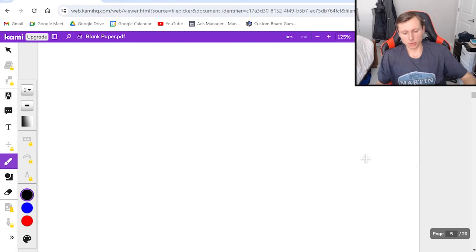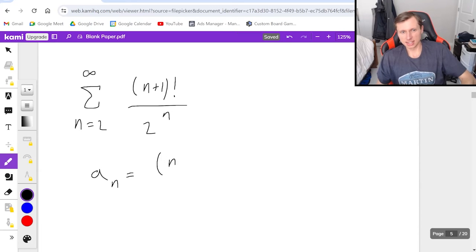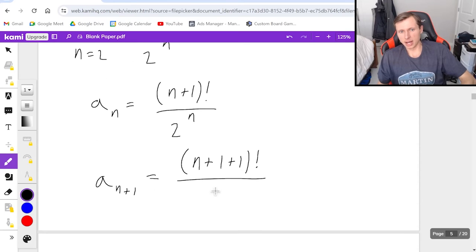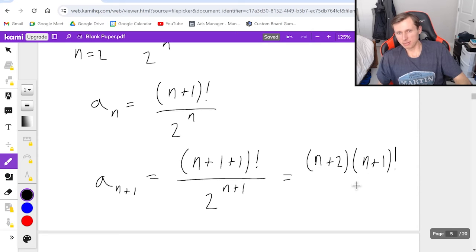So now here's the last one we're going to look at for today. It's the series from n equals 2 to infinity of n plus 1 factorial divided by 2 to the n. So for this one, a sub n is n plus 1 factorial divided by 2 to the n. It's definitely going to work because I have factorial and n in the exponent this time. So a sub n plus 1 is n plus 1 plus 1 factorial divided by 2 to the n plus 1, which I will rewrite. I could write n plus 2 factorial, or I could write it as n plus 2 times n plus 1 factorial.